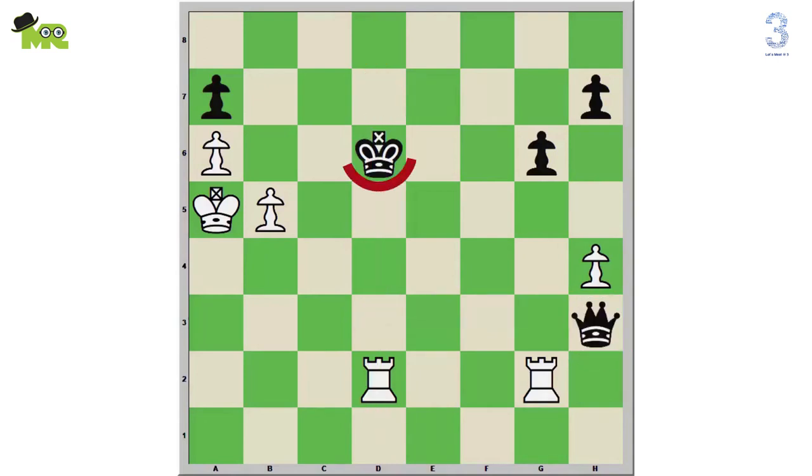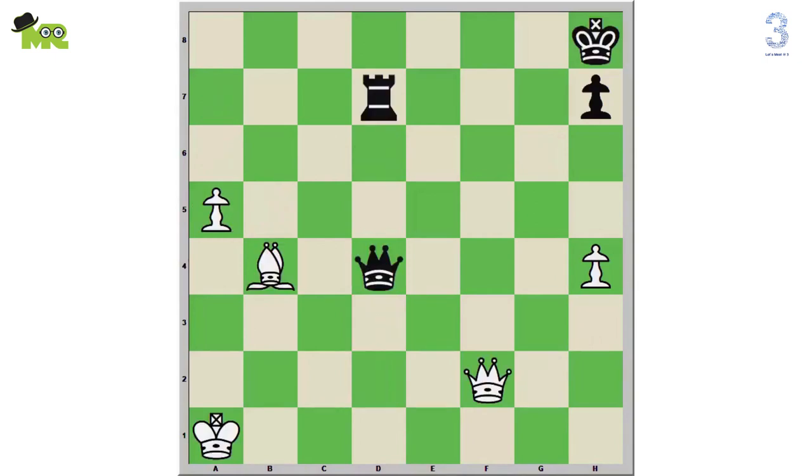Because if the black d3 queen moves, it will be check to the d6 black king by the d2 white rook. So black will lose his queen for a rook.